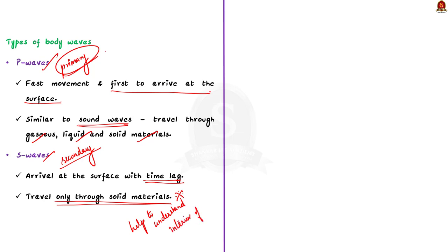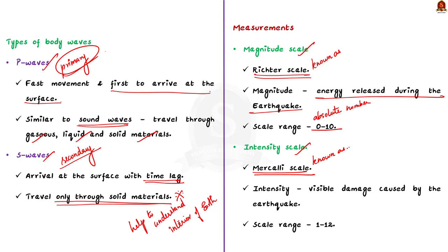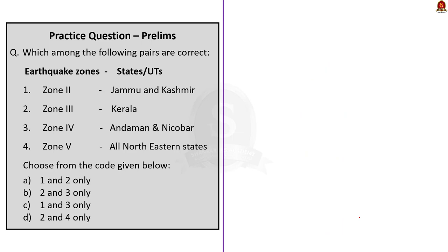Earthquake events are measured using two scales: magnitude scale and intensity scale. The magnitude scale is known as the Richter scale, where magnitude relates to the energy released during the earthquake and is expressed in absolute numbers from 0 to 10. The second is the intensity scale, also known as the Merkali scale, which takes into account the visible damage caused by the earthquake event. Its range is from 1 to 12. In this discussion, we saw about earthquake, types of earthquake waves, types of body waves, and measurement of earthquakes.